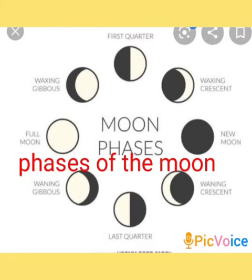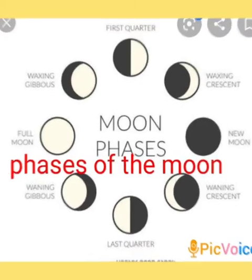What are the changes in the shape of the moon over a month called? It is called the phases of the moon, children.